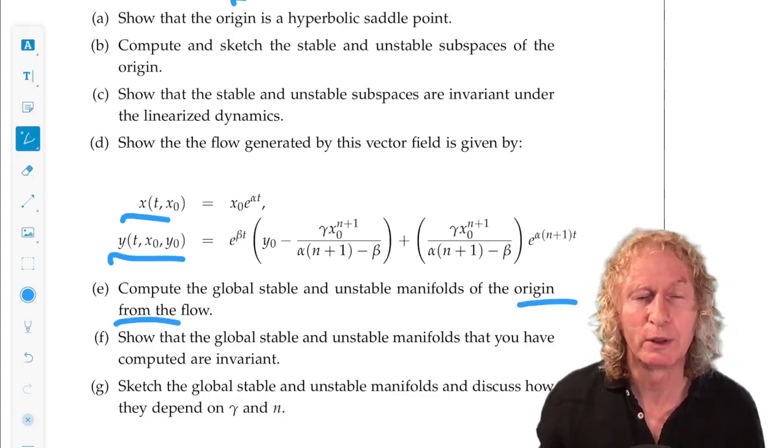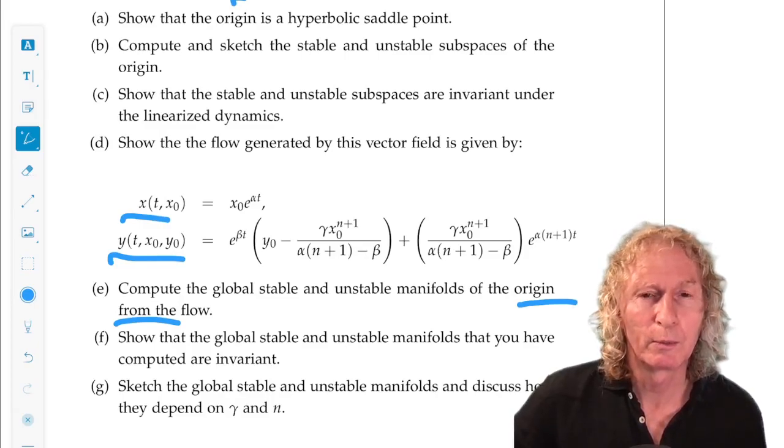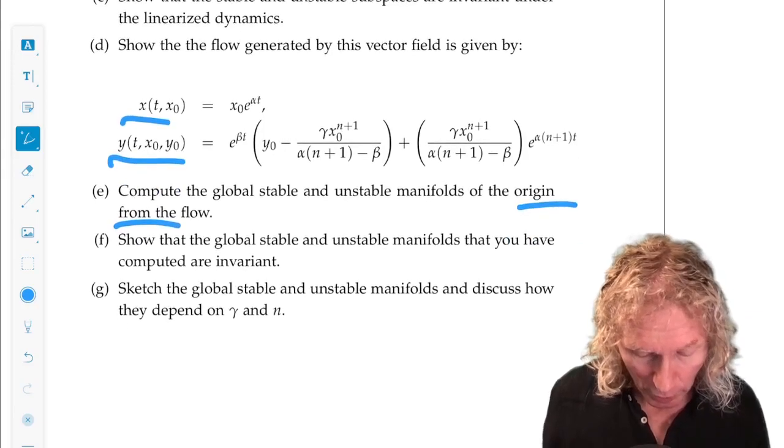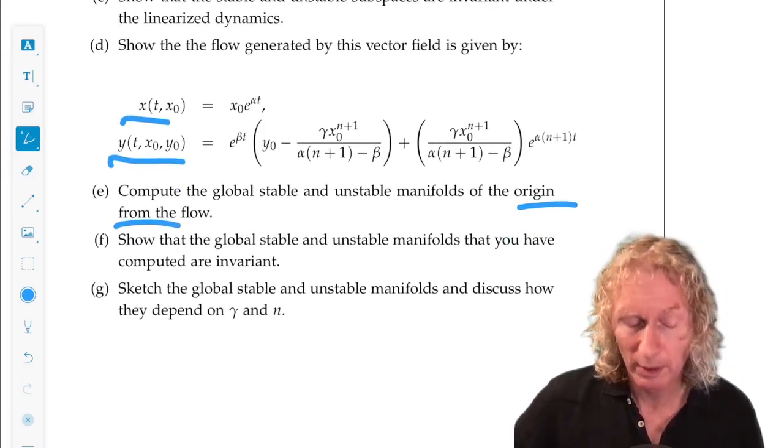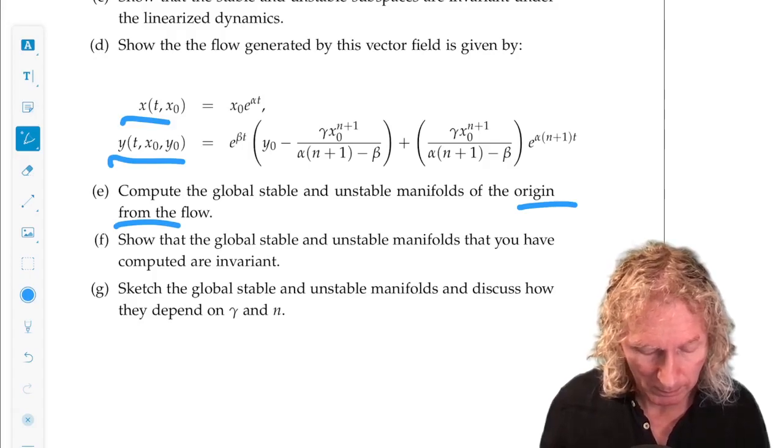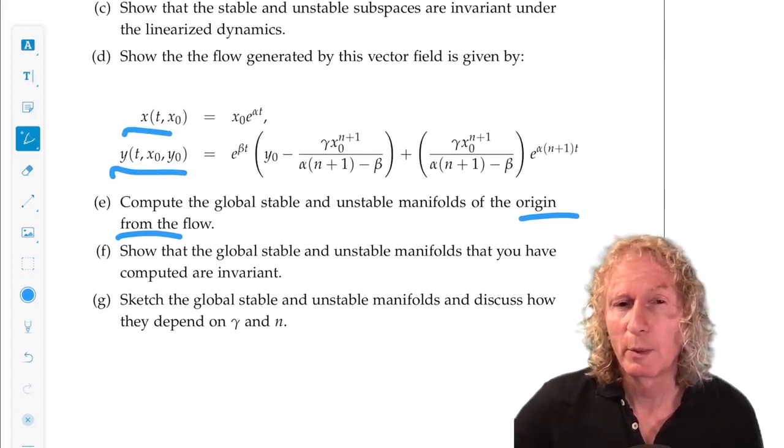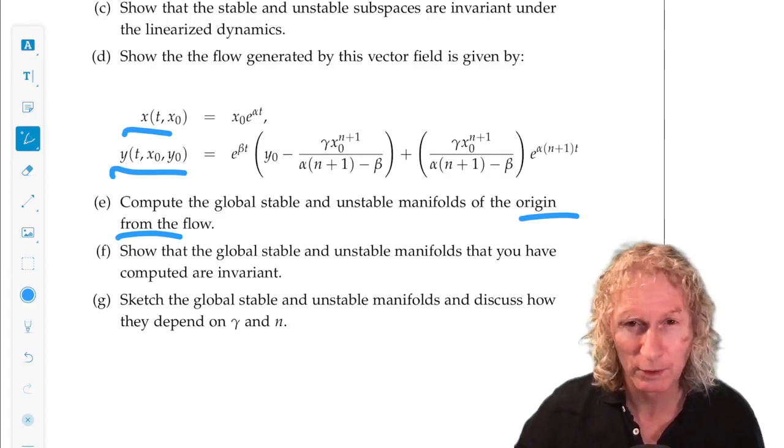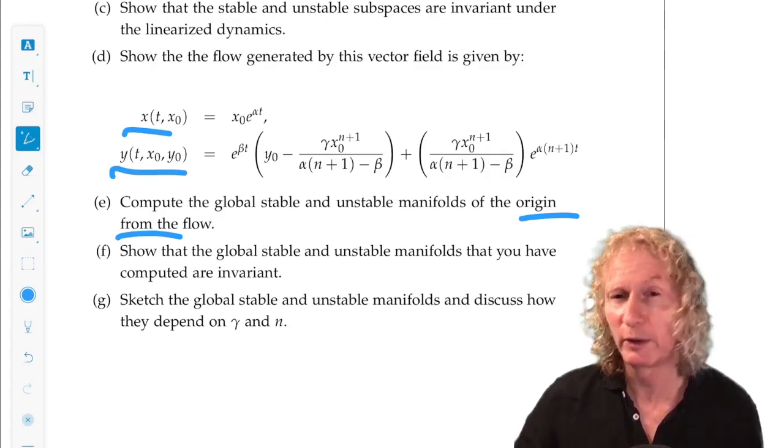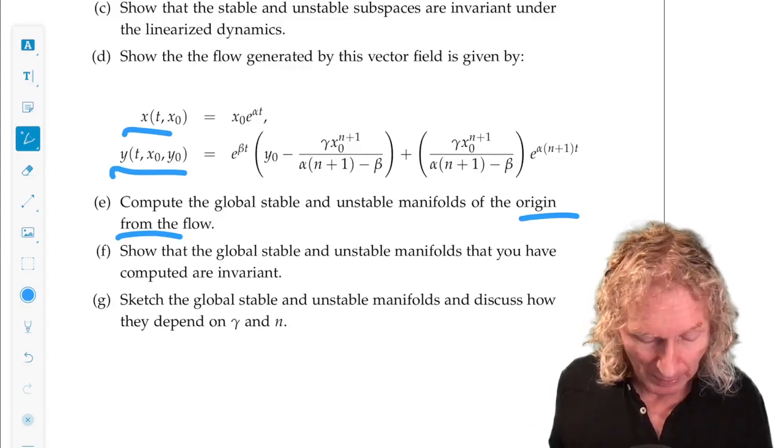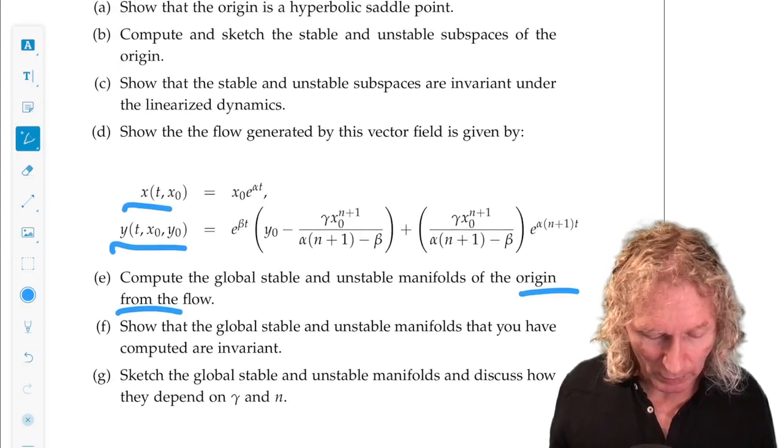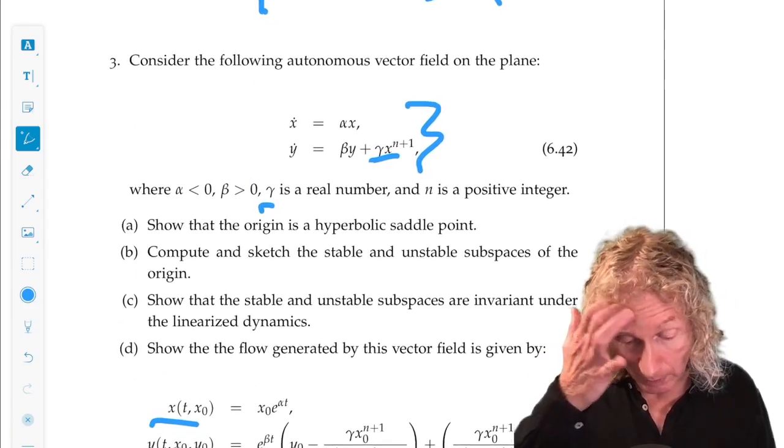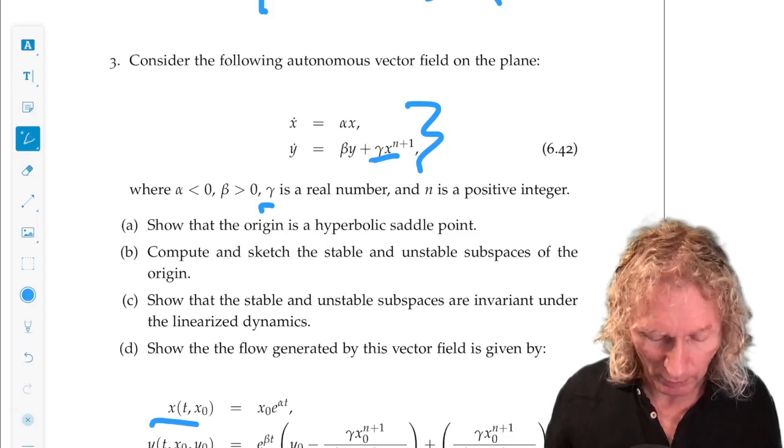Remember how you arrange all the terms, multiplying the different exponentials in time. Show that they are invariant. And sketch them. And show how they depend on gamma and n. The n is interesting. You're going to get different shaped curves. Always tangent at the origin. And so this is a really good exercise. And what I've done in other examples, I've made gamma time dependent and other things. But that's for another course.